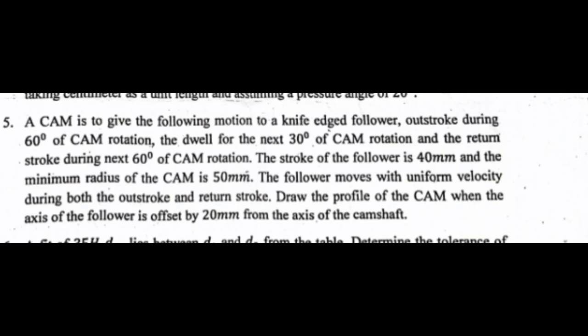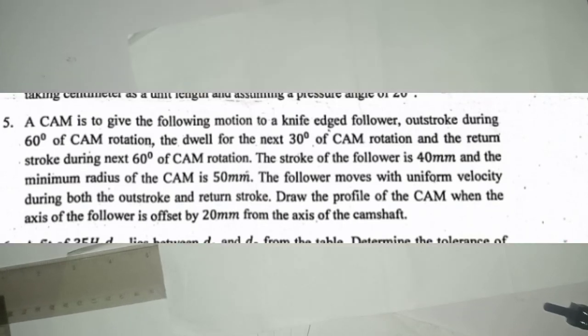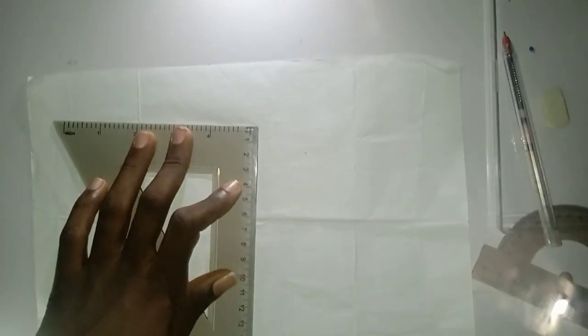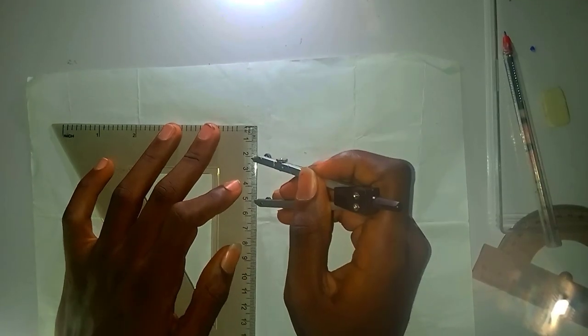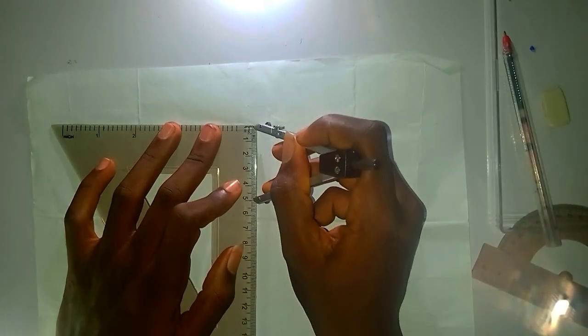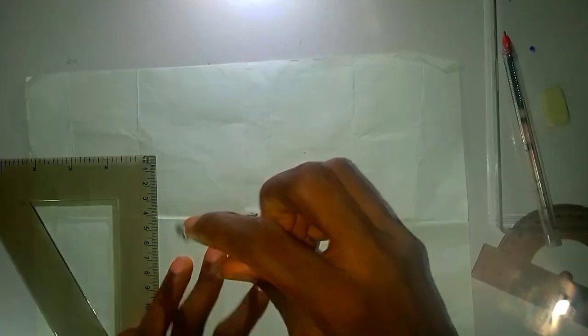Offsetting a cam profile, a past question from 2021-2022 section in RSC. From this question, we're given that the base circle is 50 millimeters. With my compass, I'm measuring 50 millimeters and I'll construct the perfect circle.